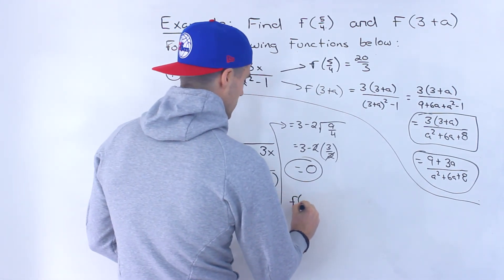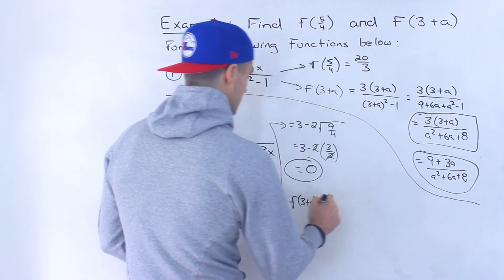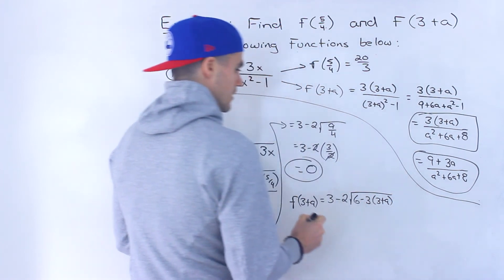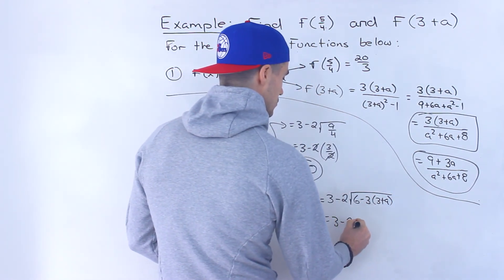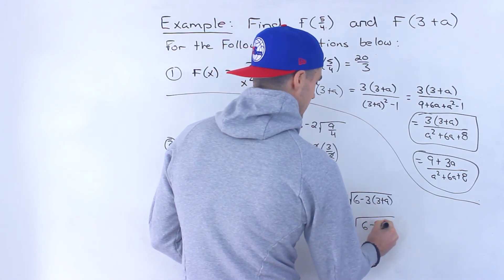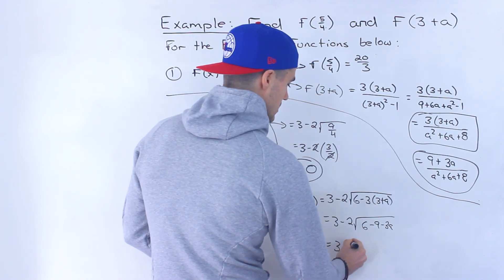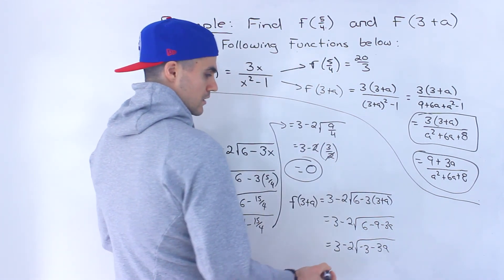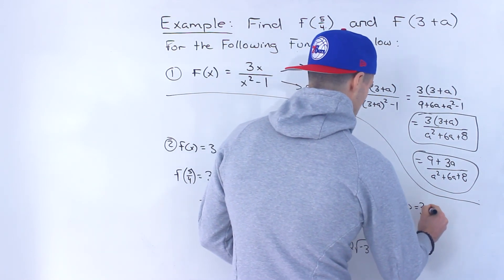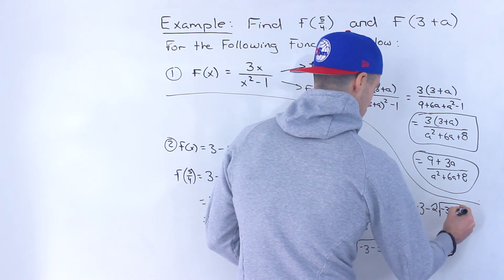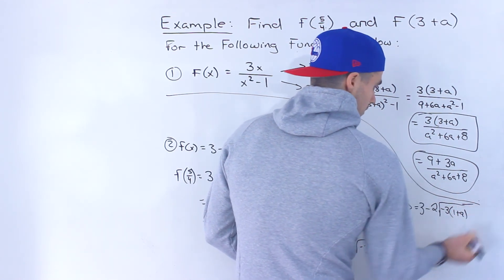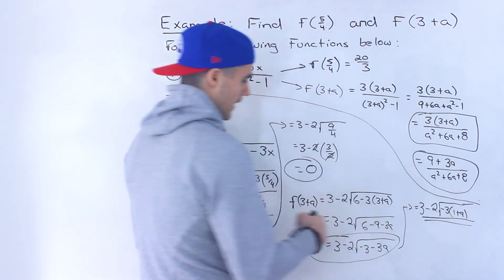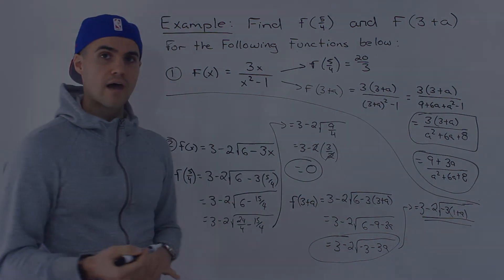For f of 3 plus a, we plug in 3 plus a for x, giving 3 minus 2 times the square root of 6 minus 3 times (3 plus a). That simplifies to negative 3 minus 3a under the square root. We can factor out a negative 3 to write it as 3 minus 2 times the square root of negative 3 times (1 plus a), which is the final answer for f of 3 plus a.